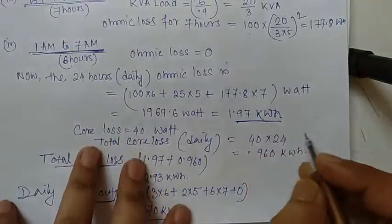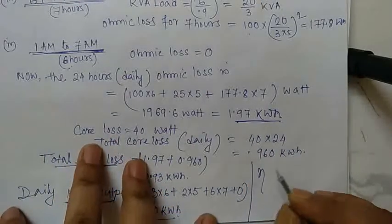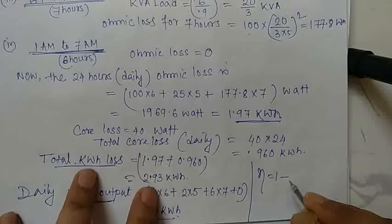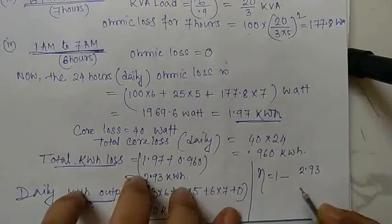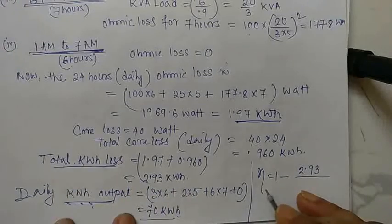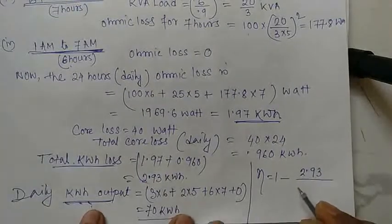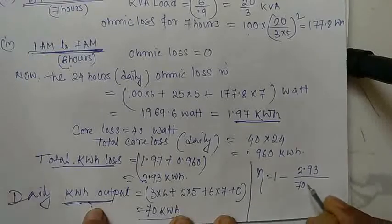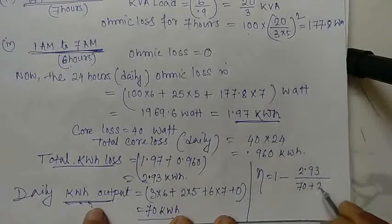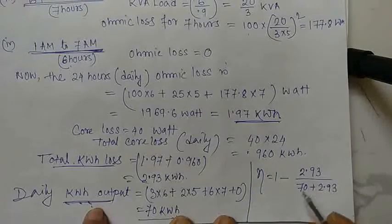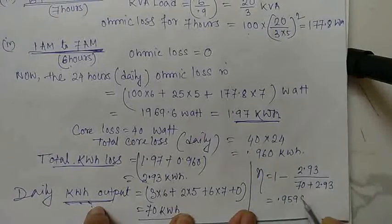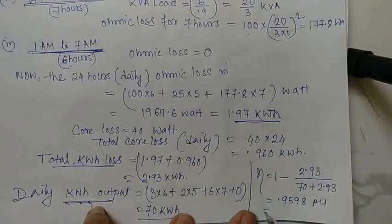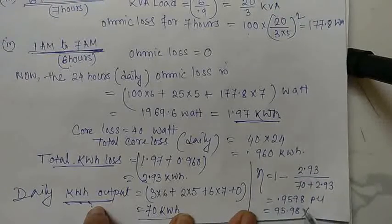The all-day efficiency equals 1 minus losses divided by input. Losses are 2.93 kWh, output is 70 kWh, and total input is 70 + 2.93 = 72.93 kWh. So efficiency = 70 / 72.93 = 0.9598 per unit, or 95.98 percent.